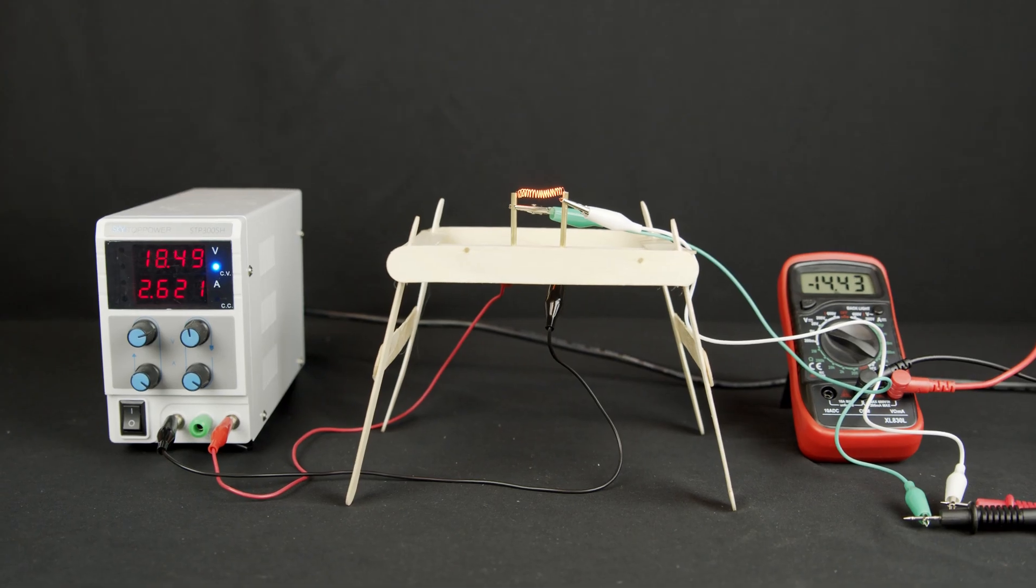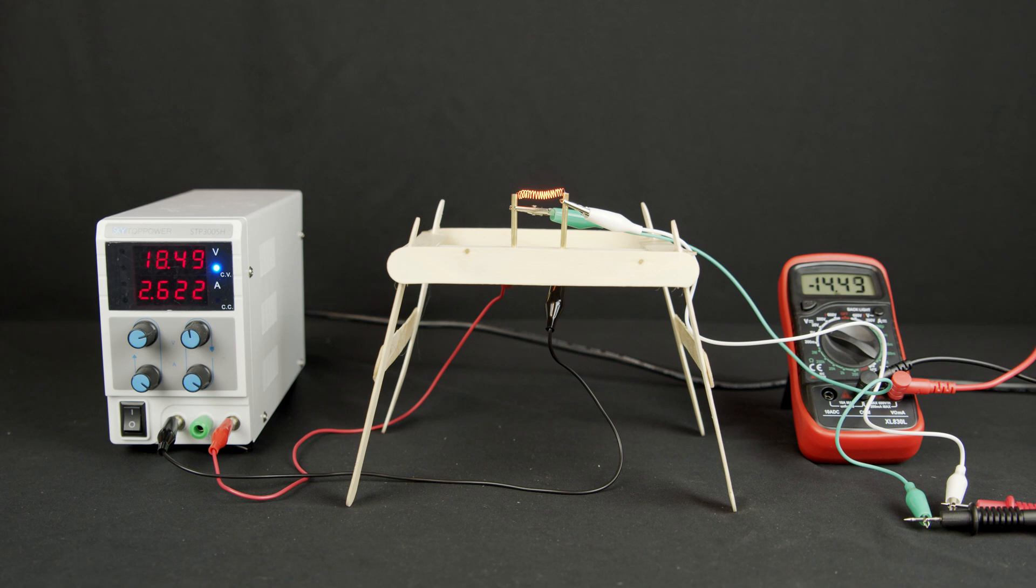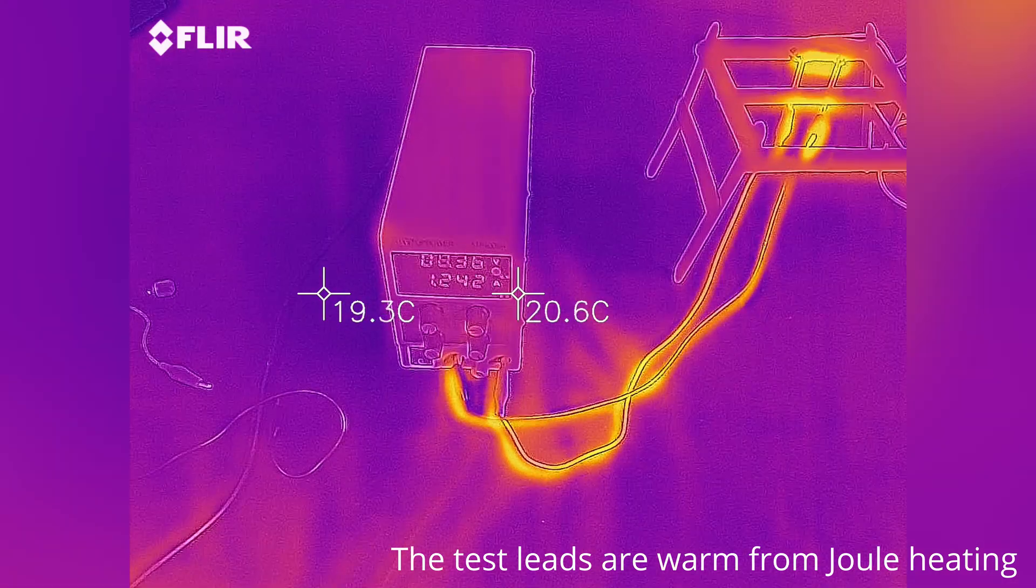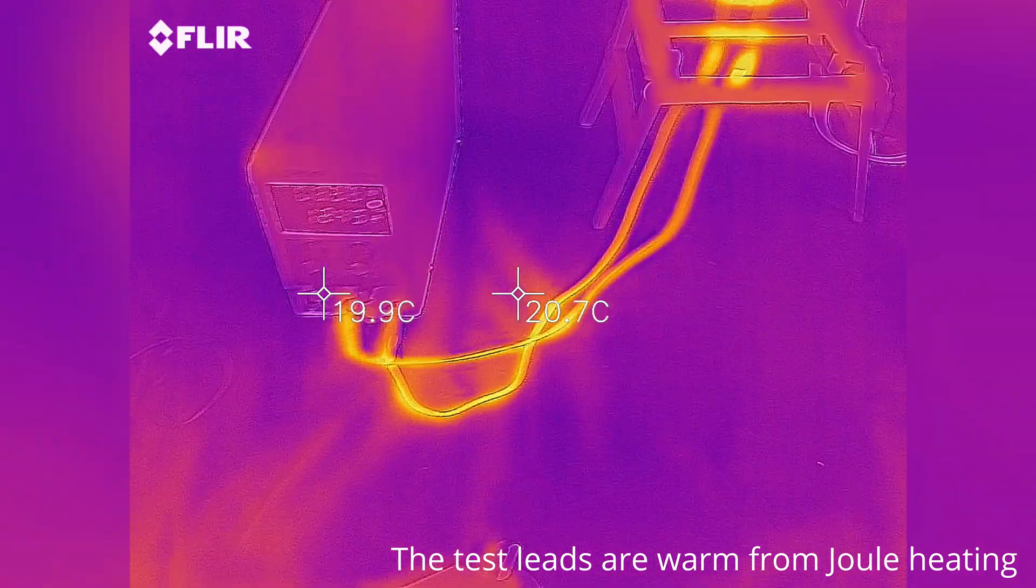To perform measurements, I connected the two terminals of the coil to a DC power supply. This power supply displays the voltage and current out of its terminals. We will only take the current value since there will be some voltage drop across the testing leads.